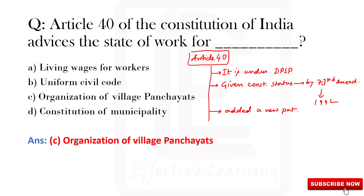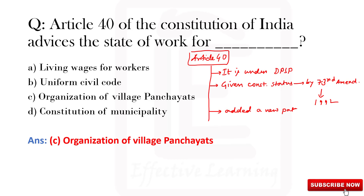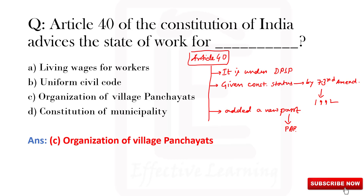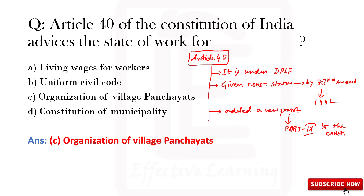Article 40 was introduced originally, but through the 73rd Amendment it was further incorporated. The 73rd Amendment introduced a new part to the Constitution of India — that is Part 9. So it added a new part, Part 9, to the Constitution of India.